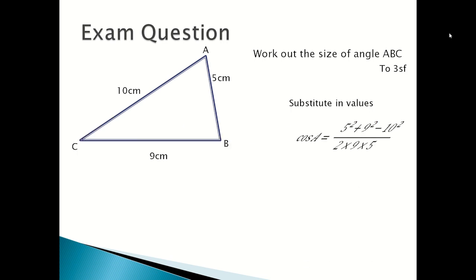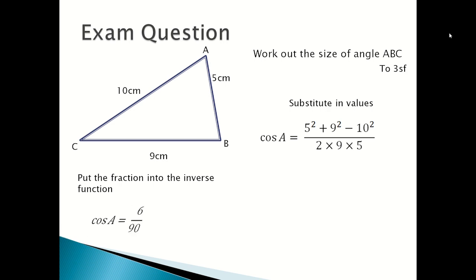After you substitute in your values, you put the fraction into the inverse function. So cos A would be equal to 6 over 90 after you simplified the fraction. Then you put it to cos to the minus 1, 6 over 90. And you will get 86.17744627. And then the question wants it to 3 significant figures. So the size of the angle ABC is 86.2 degrees.